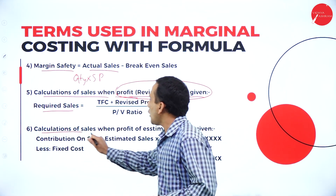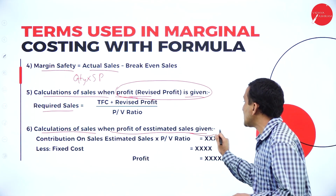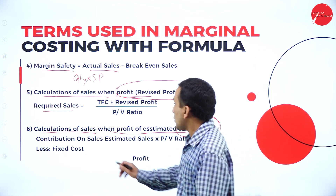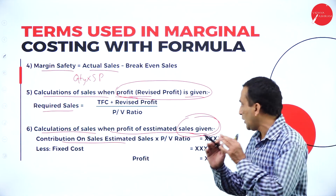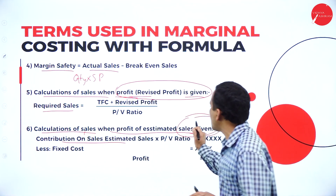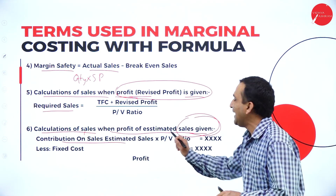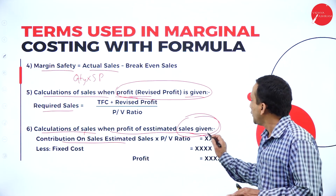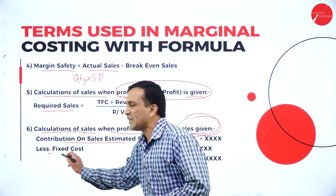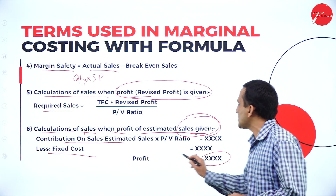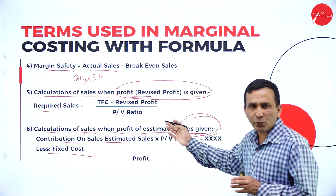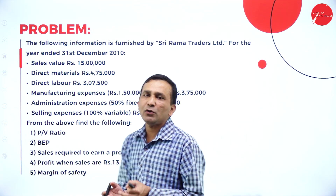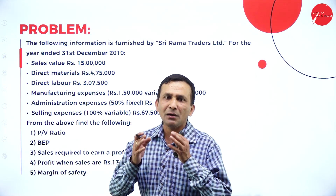Next, calculation of sales when estimated sales is given — here the sales is given and we need to calculate the profit. For that, first calculate the contribution from sales by multiplying the sales value given by the PV ratio. Whatever answer you get, write it in the amount column. From this, subtract the fixed cost. The difference is called profit, because we are expecting profit — the sale is given in the question, and this is completely the calculation part. There is one question to understand this much better, for more practical clarity.